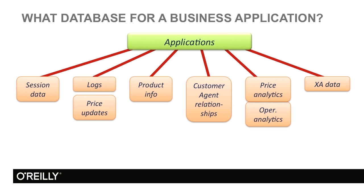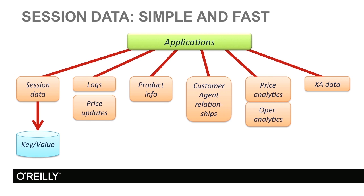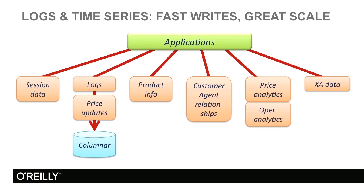What we will show here is an extreme case in which we are choosing one database for each area of our application. For session data, we can store our data in a key-value store. The key can be the user ID, and the value would be the content of the user session. In dealing with logs, particularly when the values are coming with great speed, columnar stores would be very useful.